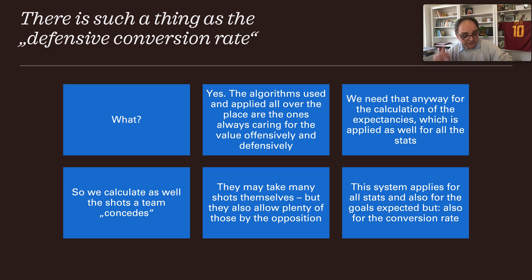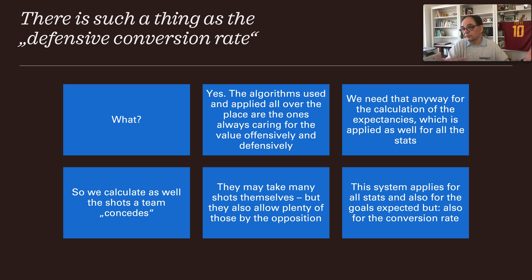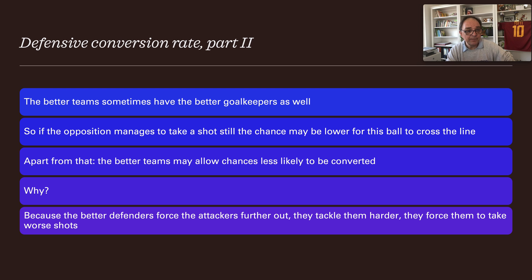We also calculate the shots a team concedes. A team may take many shots themselves but also allow plenty from the opposition — you wouldn't automatically call them a very good side just because they shoot a lot, if they also concede heavily. This system applies to all stats, including expected goals and the conversion rate. The defensive conversion rate matters too: better teams sometimes have better goalkeepers.